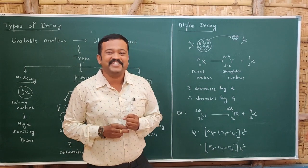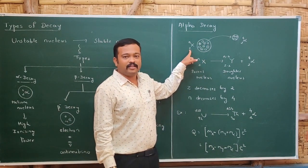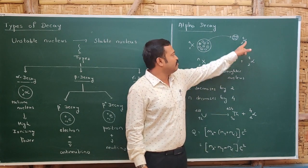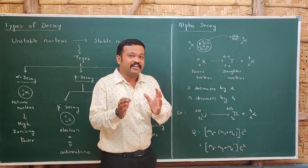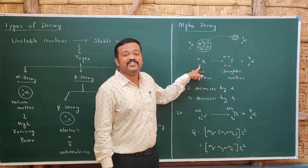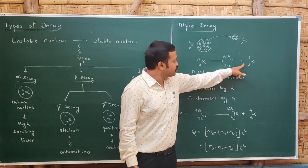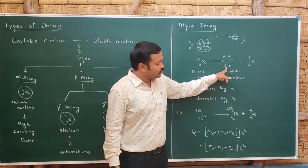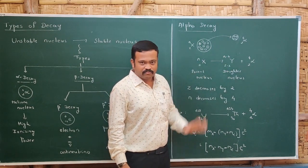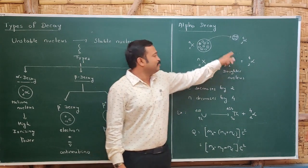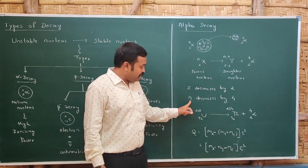Now let us understand alpha decay in detail. Alpha decay takes place usually in heavier nuclei. If we take a nucleus whose atomic number is Z and mass number is A, when an alpha particle with atomic number 2 and mass number 4 is emitted, there will be a change in the nucleus because there is a change in atomic number. So X(Z, A) changes to Y(Z−2, A−4), since two protons and two neutrons are released. We call the original nucleus the parent nucleus and the resulting nucleus the daughter nucleus. When an alpha particle is emitted, atomic number decreases by 2 and mass number decreases by 4.